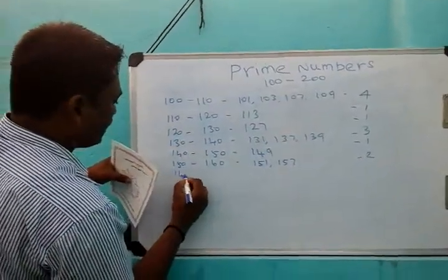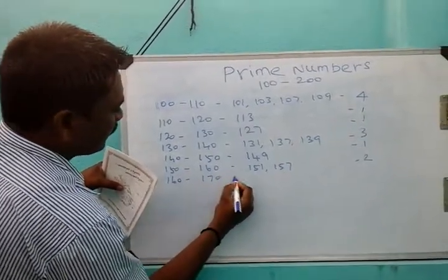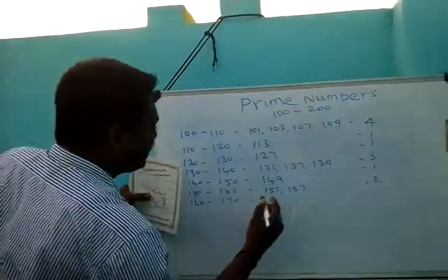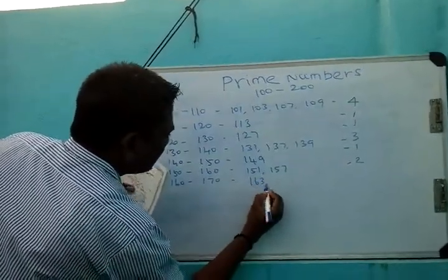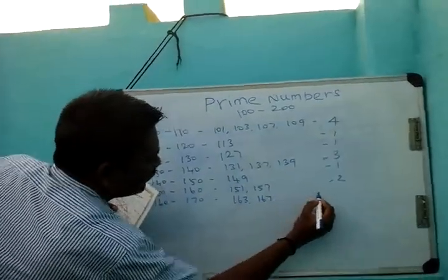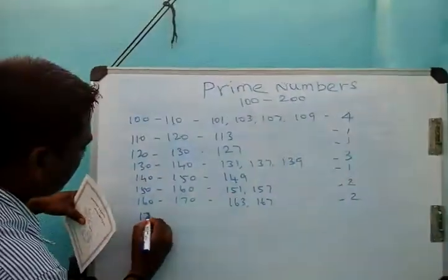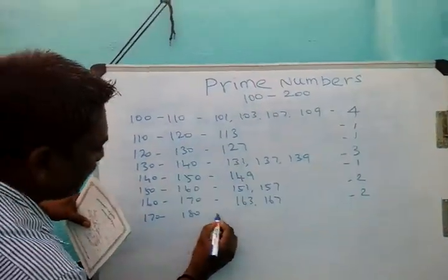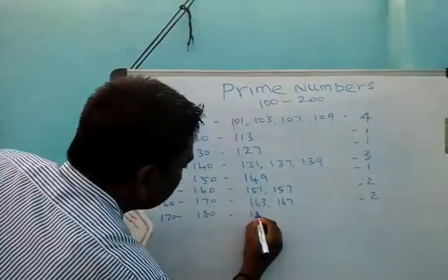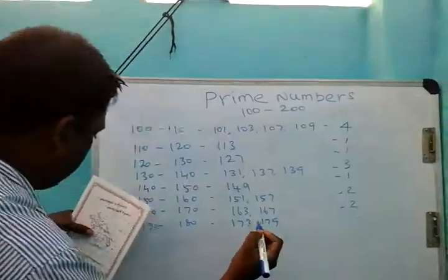Now, from 160 to 170, we have 163 and 167. Now from 170 to 180, we have 173 and 179.